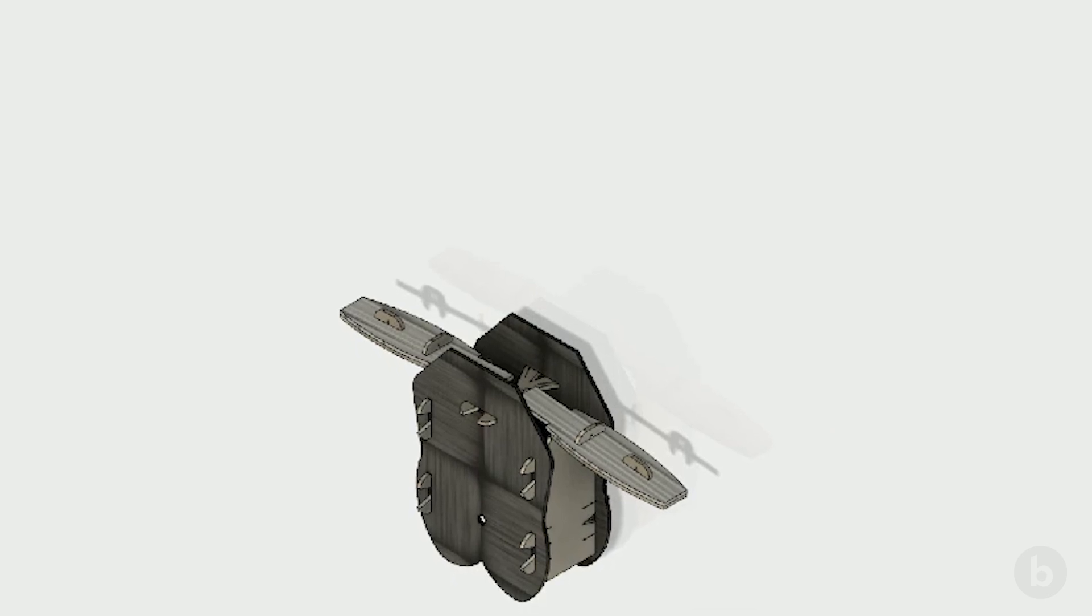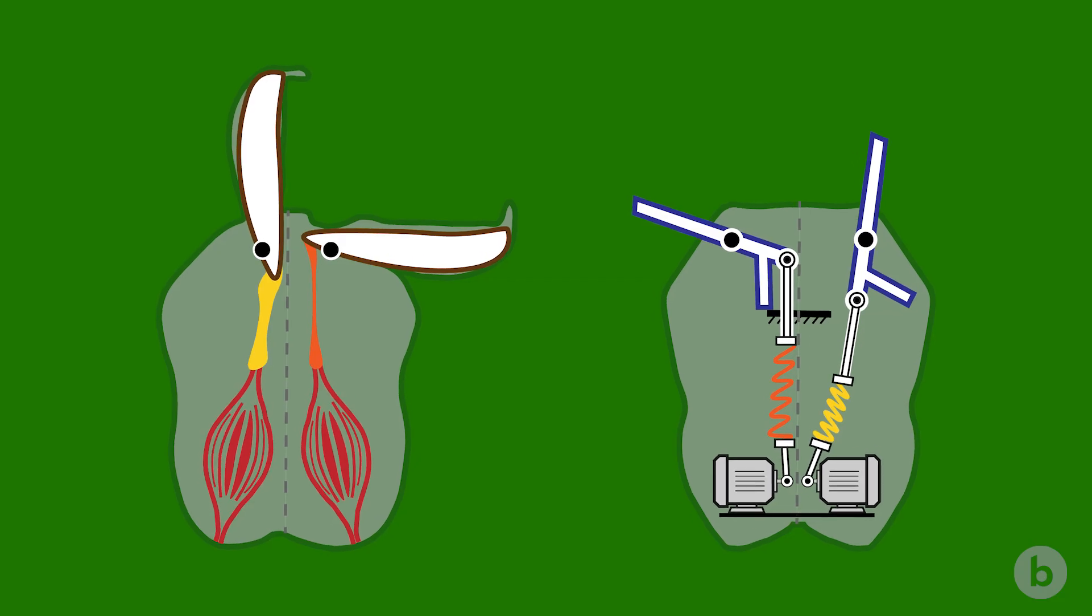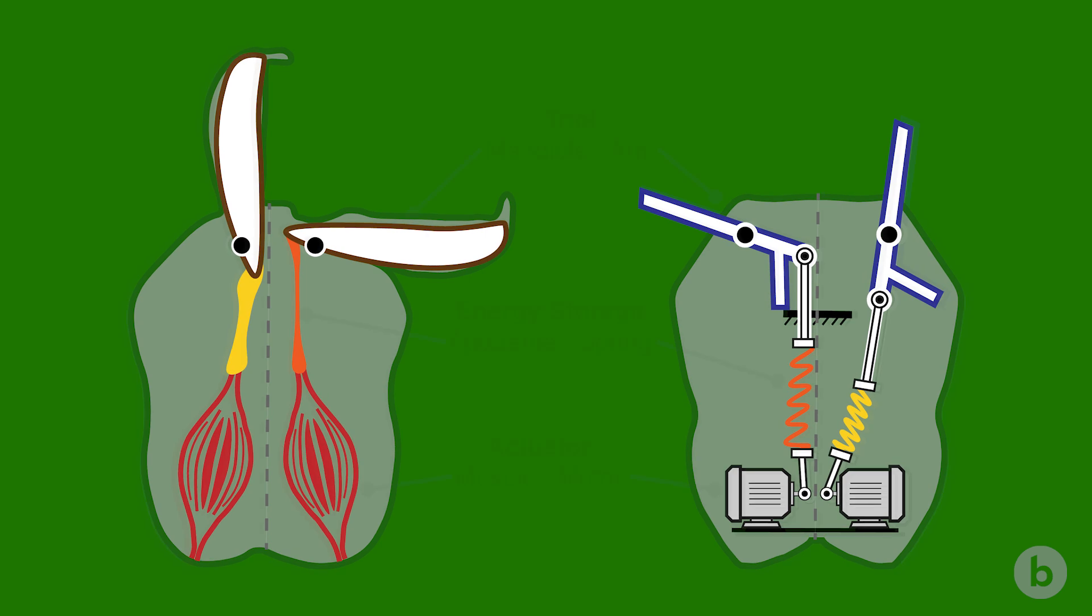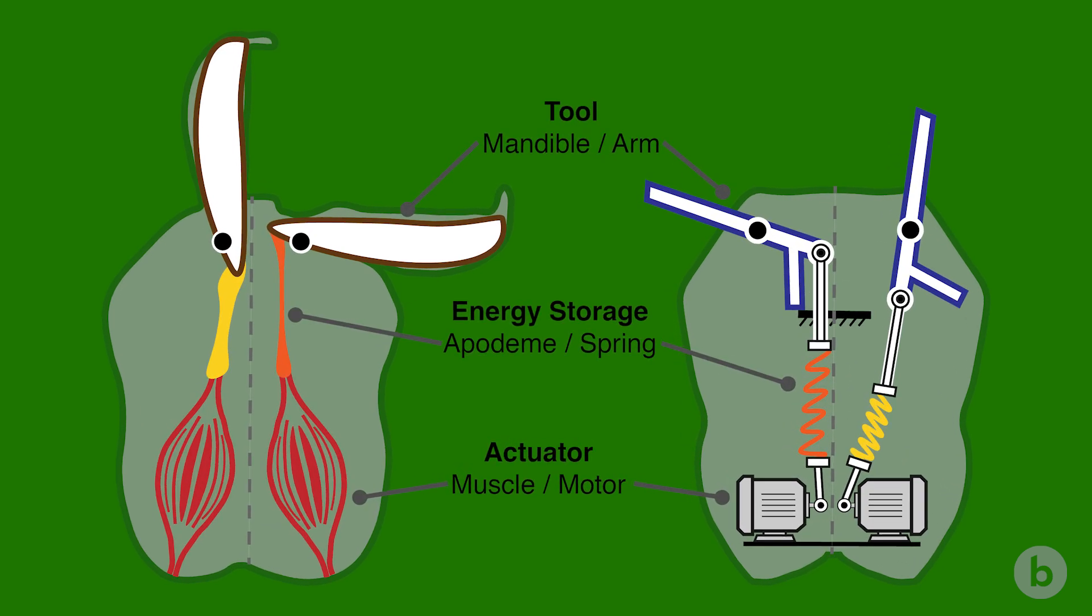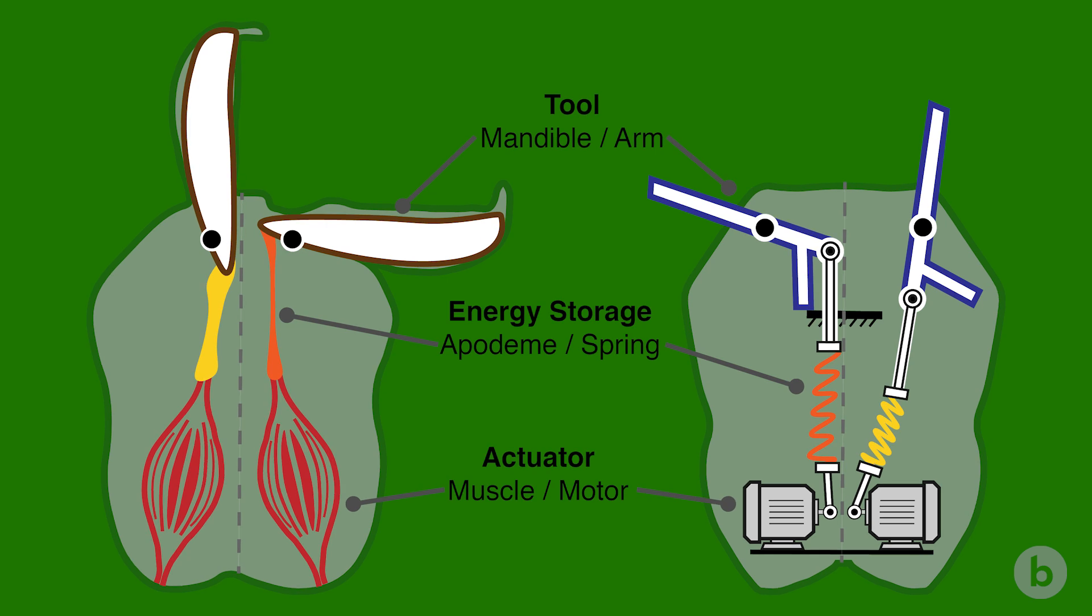So she went and used a different latch in her model. We're realizing that maybe we've actually misunderstood it all this time. And in fact, the latch in trap jaw ants probably works a lot more like the one that she realized would work in this case.